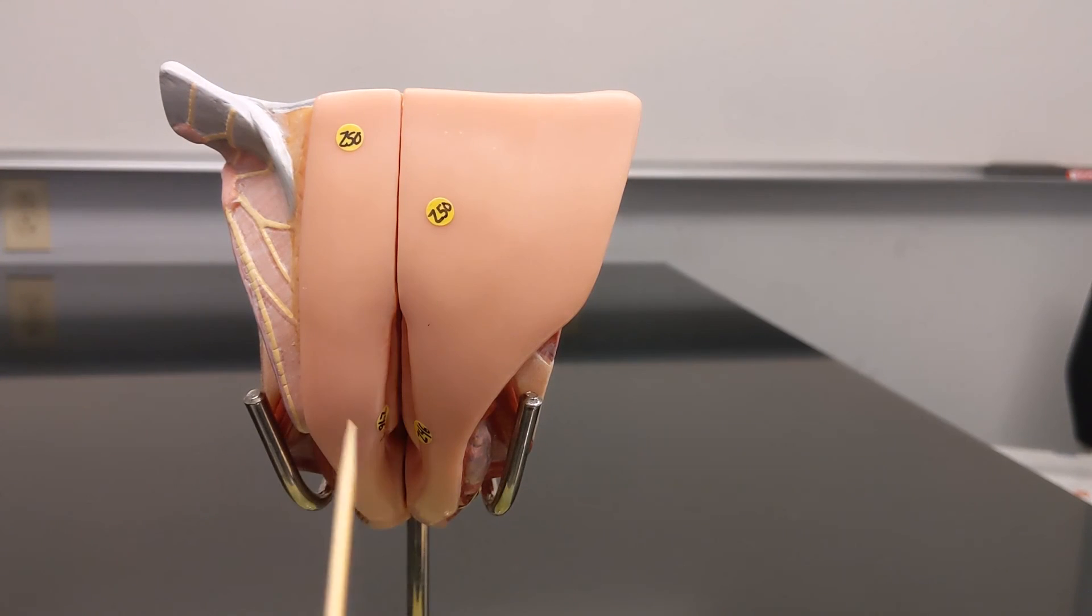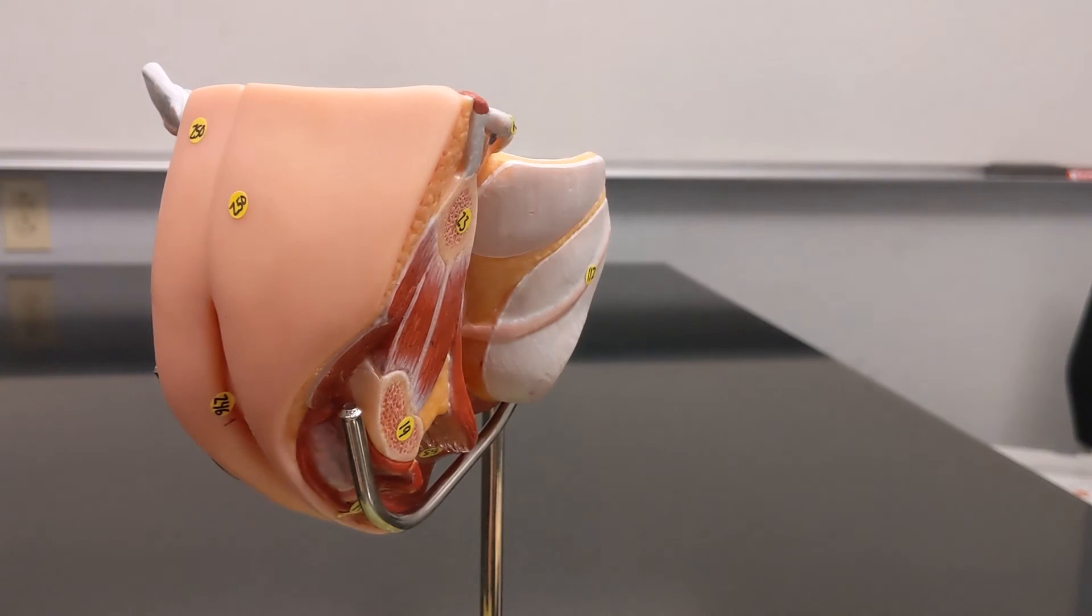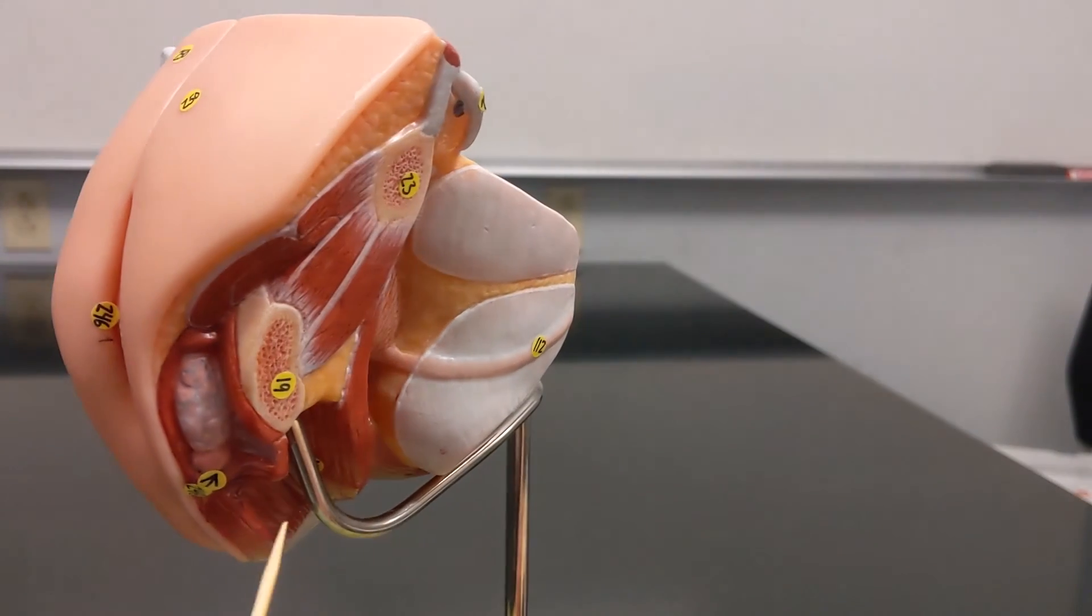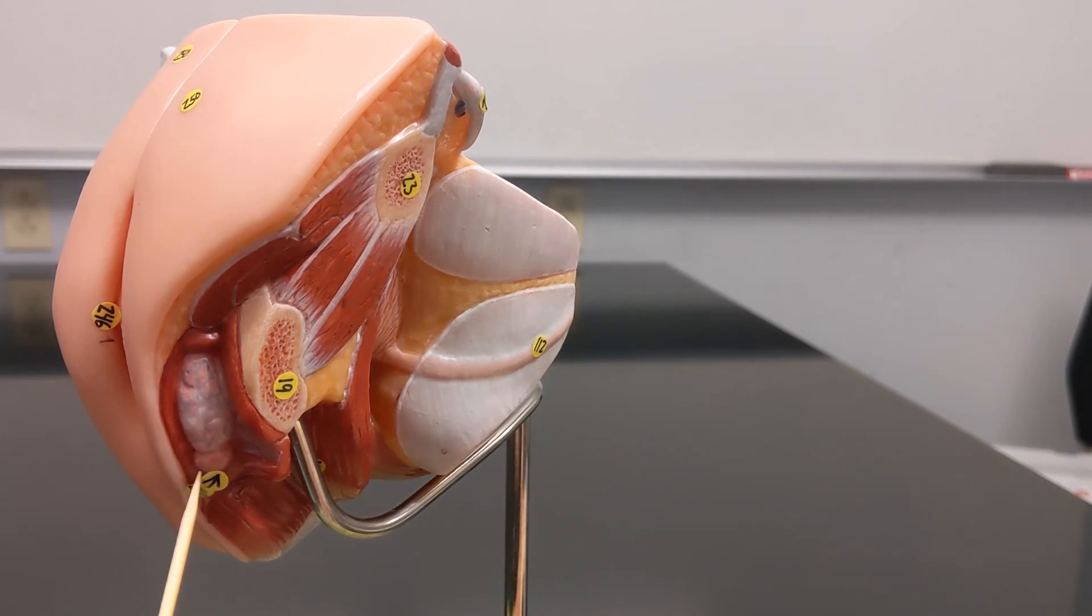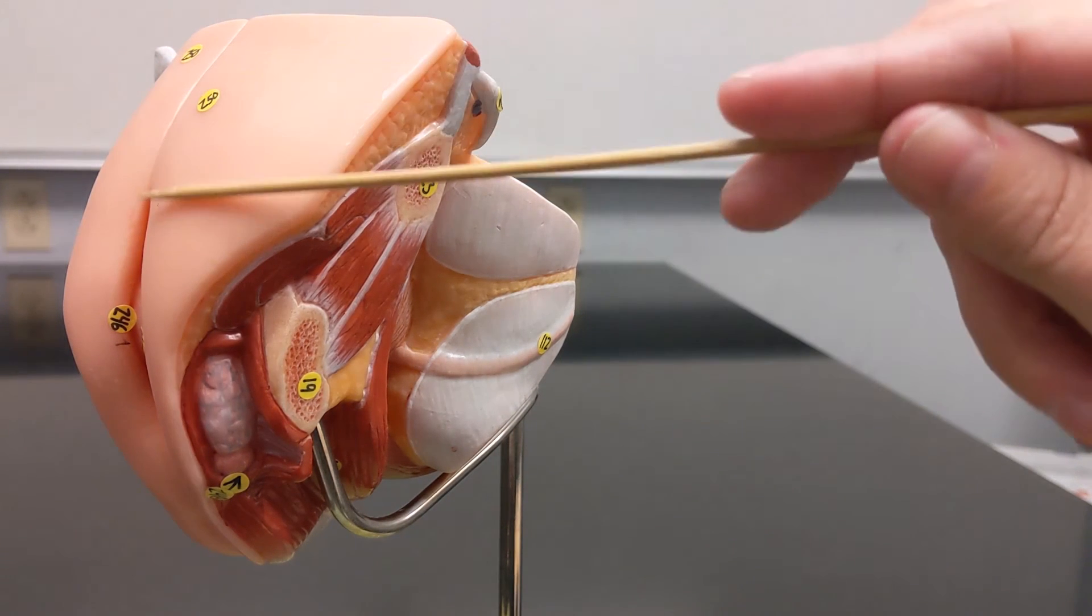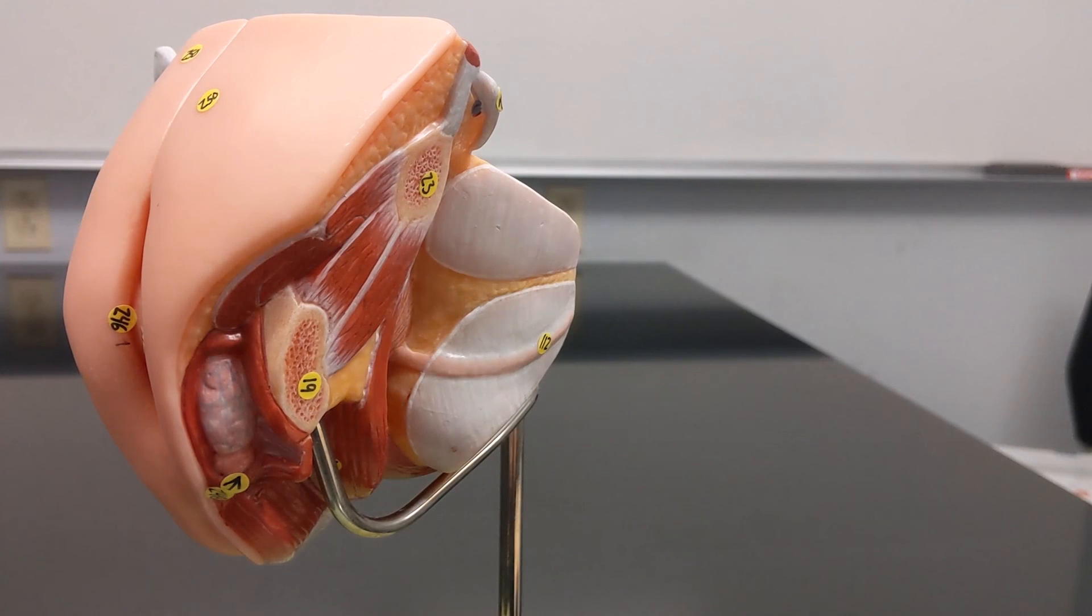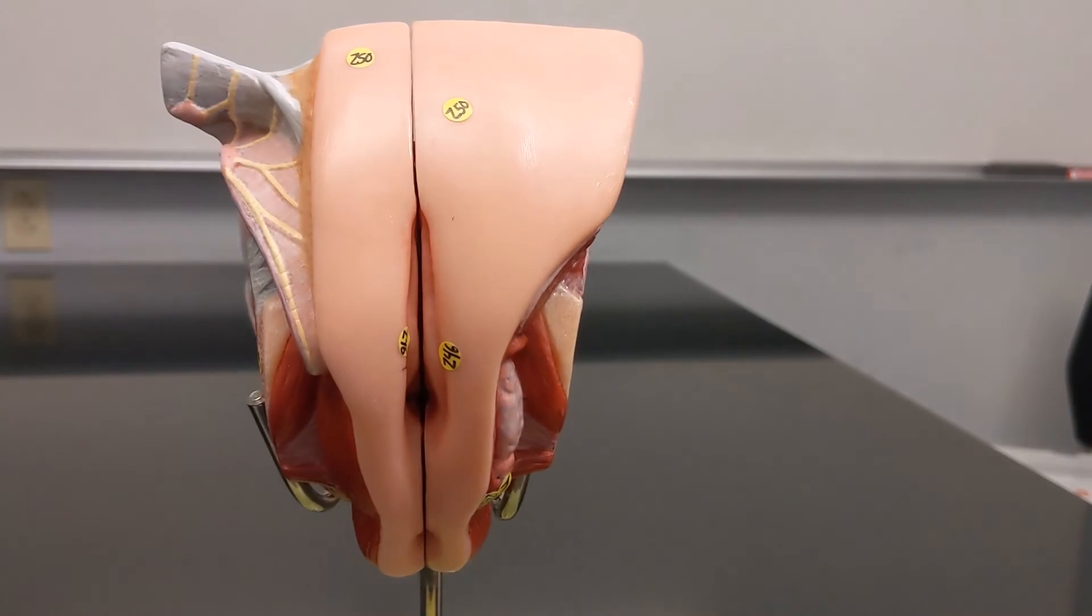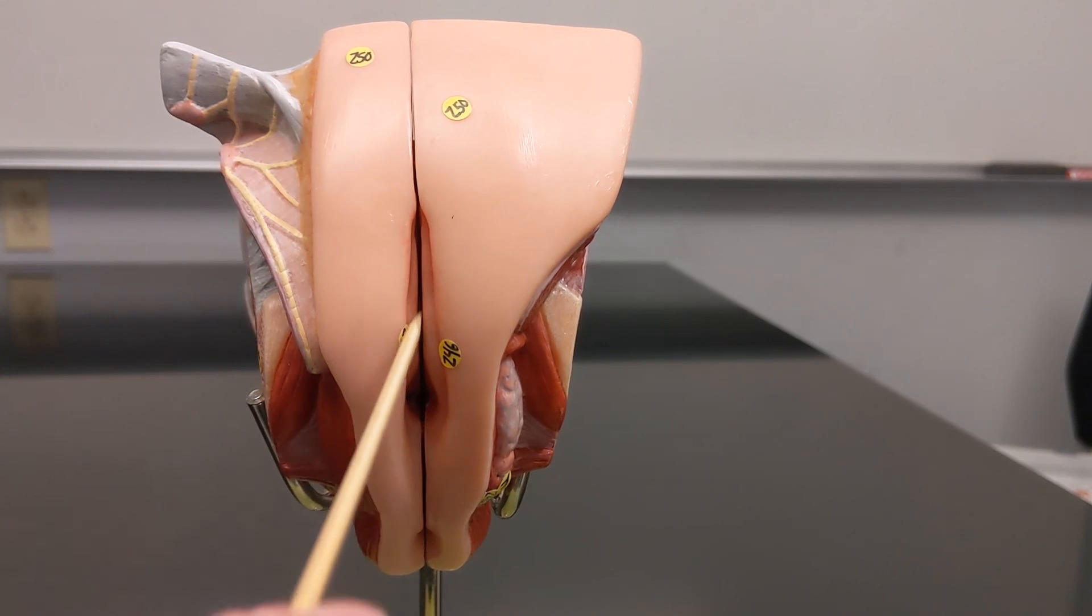What is this? This? This. And that. So the fat pad in the front is the mons pubis. This is the greater vestibular gland, also sometimes called the Bartholin's gland, and once again this is the labia majora and labia minora.